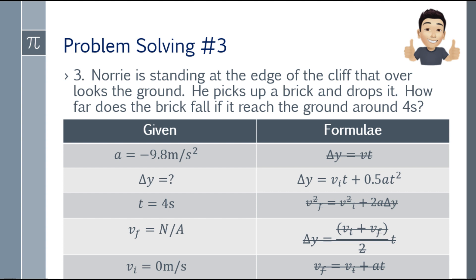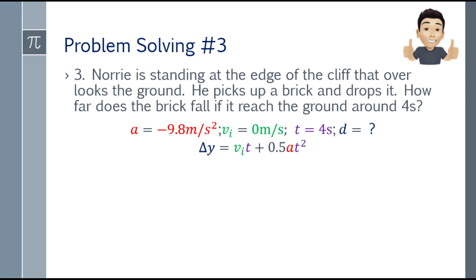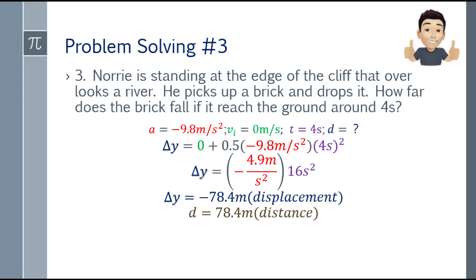Using the second formula: delta y equals initial velocity times time plus 0.5 times acceleration times t squared. Substituting: delta y equals 0 plus 0.5 times negative 9.8 times 4 squared, which gives negative 4.9 times 16, so delta y equals negative 78.4 meters. Since we're looking for distance — how far the brick falls — we take the positive value: 78.4 meters.